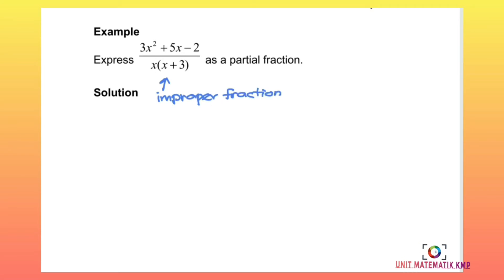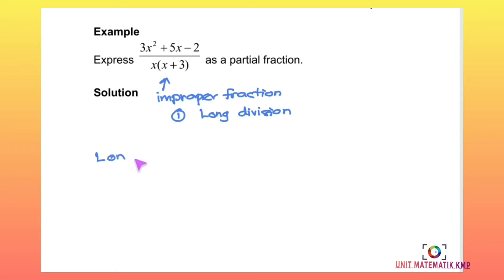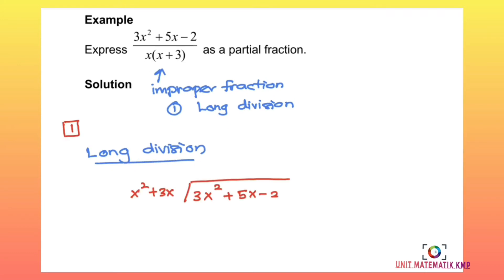Since this is an improper fraction, the first step is to perform long division to obtain a proper fraction. We carry out long division of 3x² + 5x − 2 divided by the divisor x² + 3x.